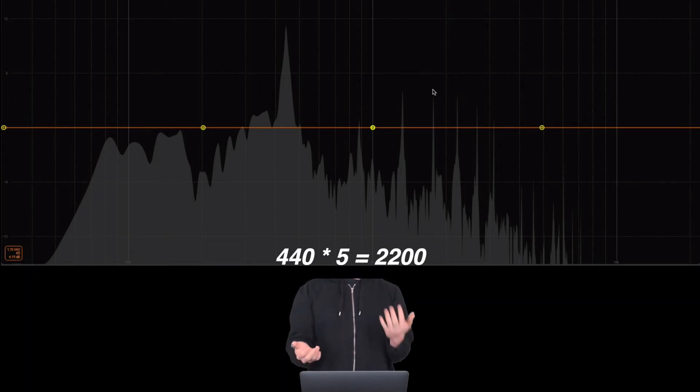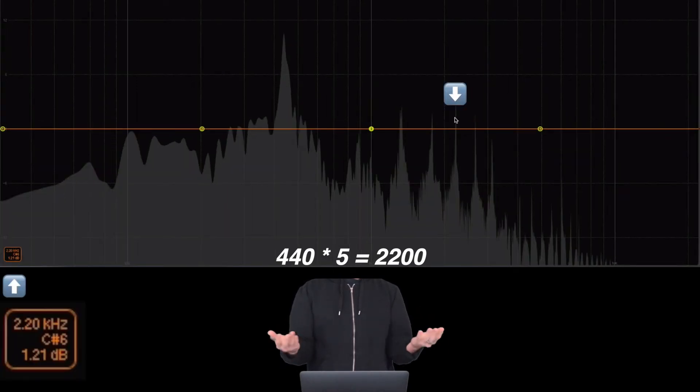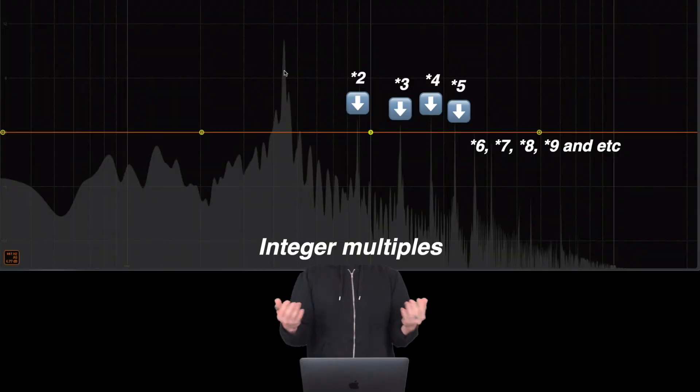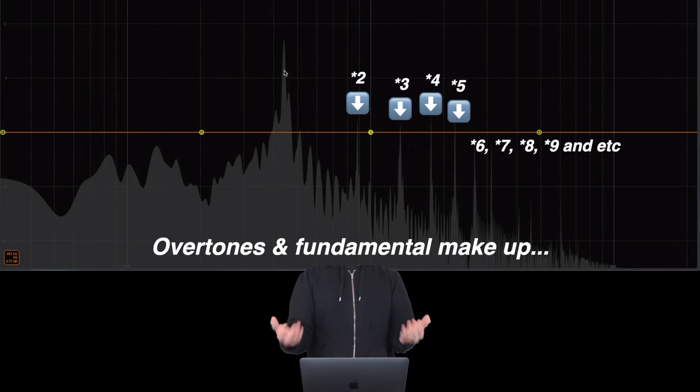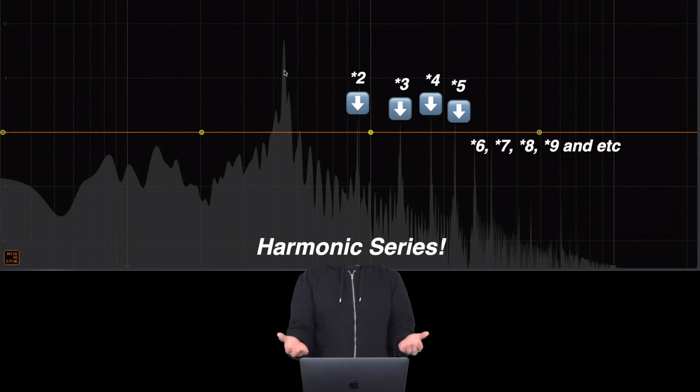Okay, 440 times 5 is 2200. Let's see if there is a peak there. Yes! So, these sine tones are related in integer multiple. These overtones and the fundamental frequency are part of what is known as the harmonic series.